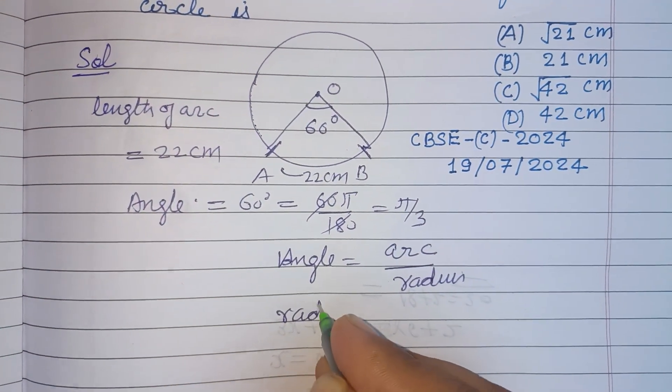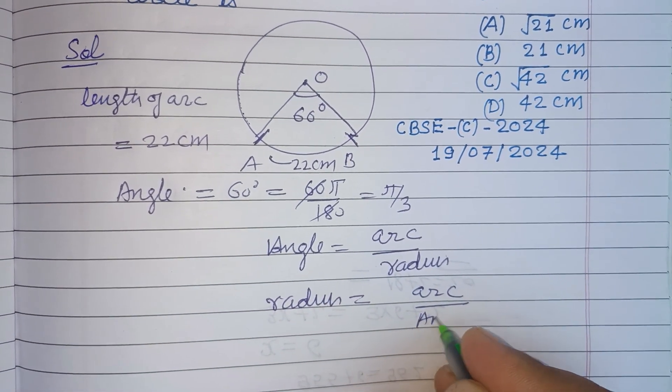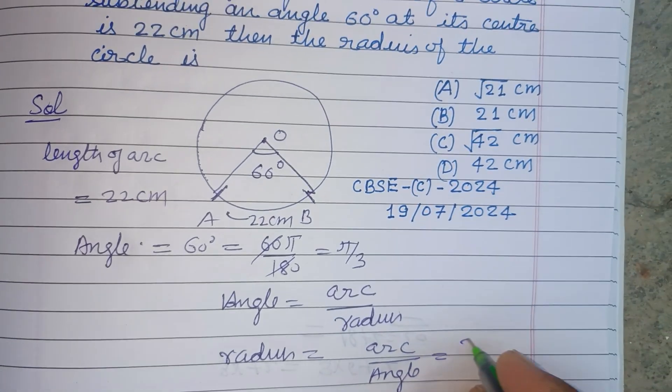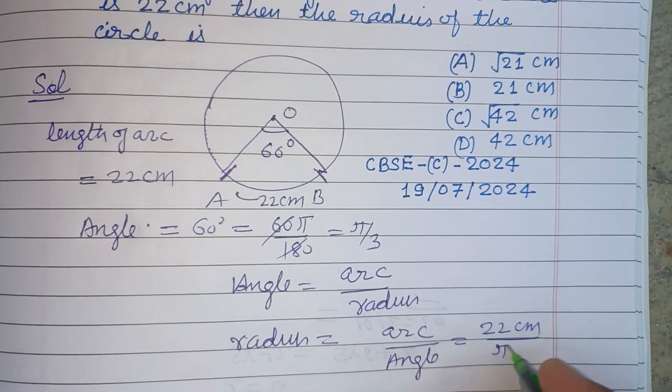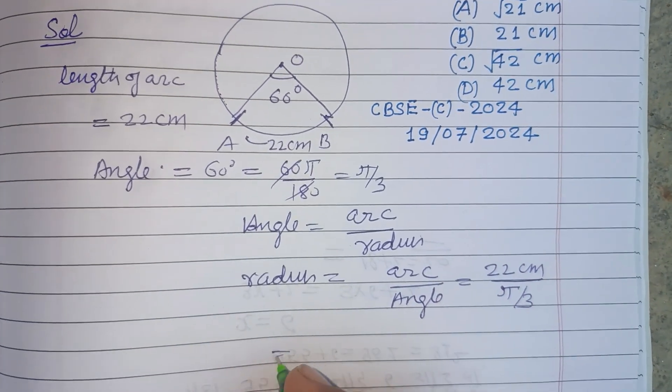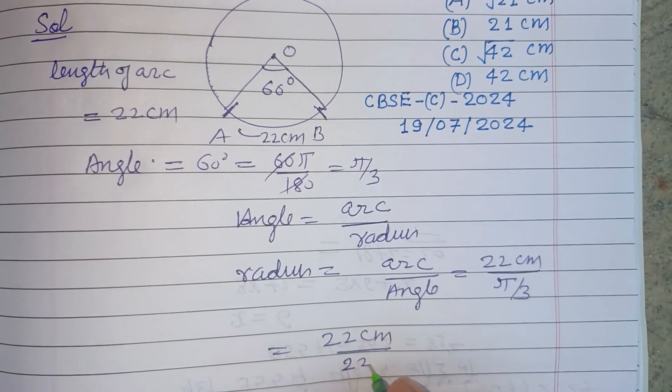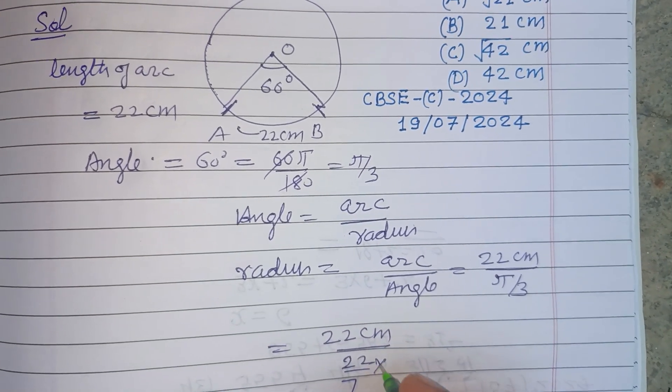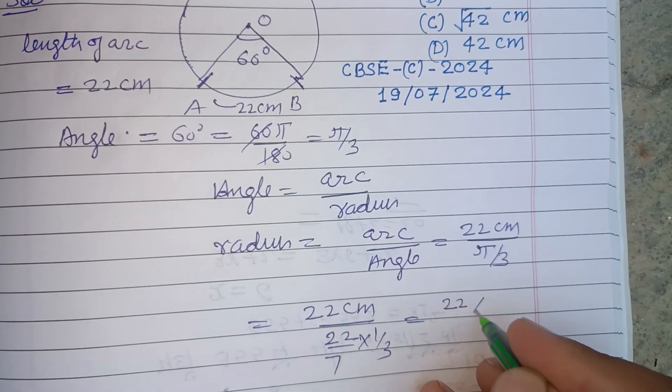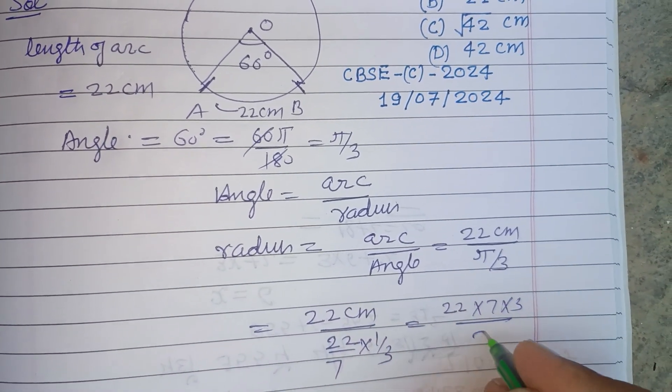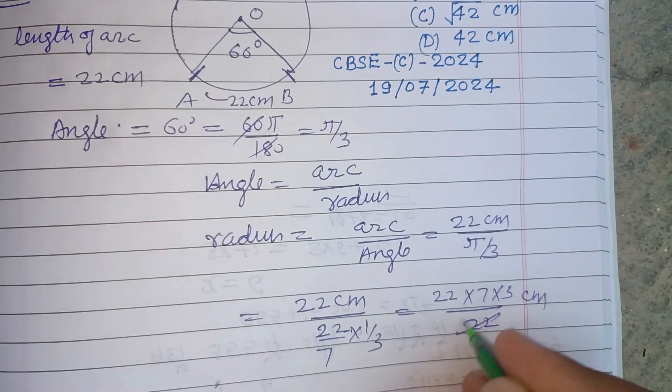Arc is 22 centimeters and angle is π/3. So 22 centimeters divided by π/3 equals 22 times 3/π. π is 22/7, so this becomes 22 times 7 times 3 over 22. The 22s cancel, radius equals 7 times 3 which is 21 centimeters.